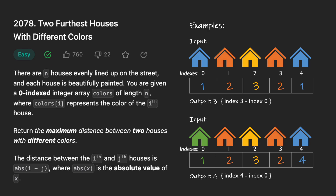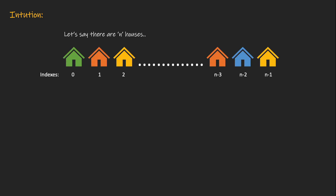Now let's discuss possible solutions. Say there are n houses starting from index 0 to n-1. To find the maximum distance between two differently colored houses, we can start from the two edges. If we find the colors are different, we can return from here. If not, we iterate to the next house from either side. If the first and last house are of different color, we return and the maximum distance is n-1 minus 0, that is n-1.